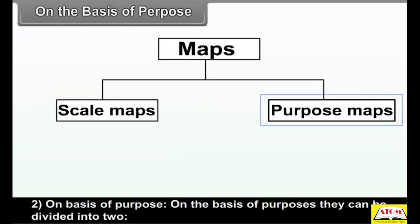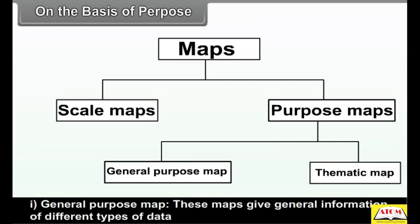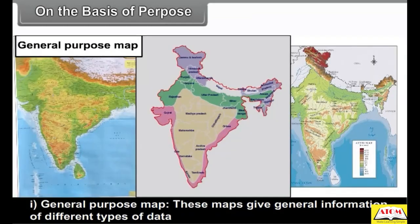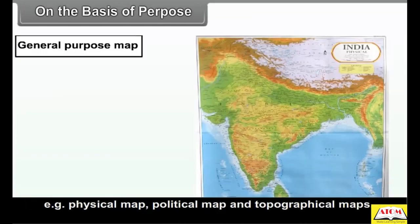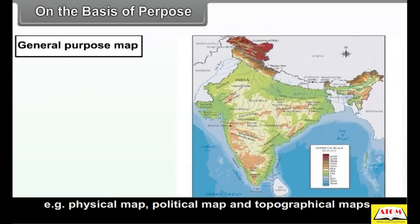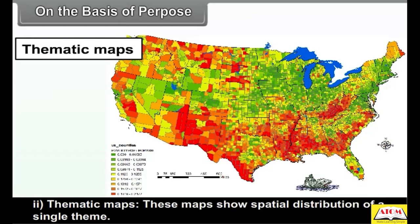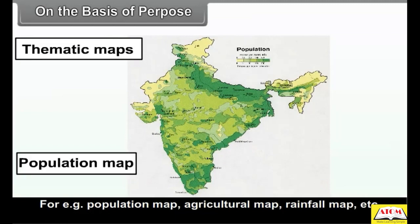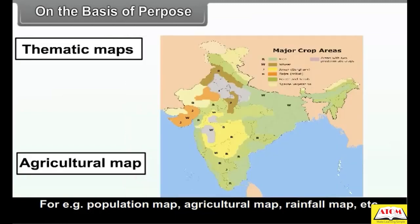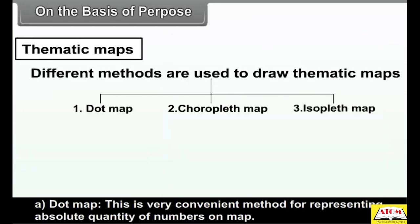On the basis of purpose, maps can be divided into two types. A. General purpose maps: these maps give general information of different types of data, for example, physical map, political map, and topographical maps. B. Thematic maps: these maps show the spatial distribution of a single theme, for example, population map, agricultural map, rainfall map, etc. Different methods are used to draw thematic maps.